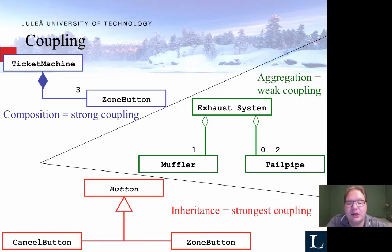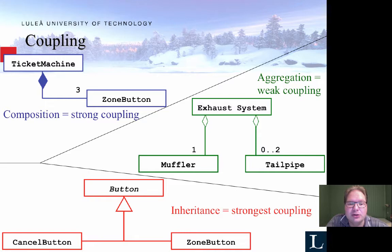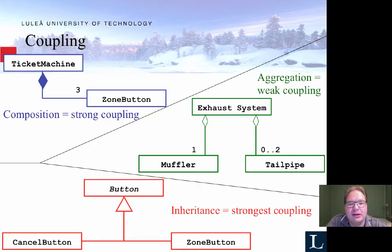We should strive for aggregation, but just to explain the different versions: composition is when an object owns another object. That means that other object cannot exist without the parent object. The zone button cannot exist without the ticket machine — it's useless. So there's some strong coupling between these.